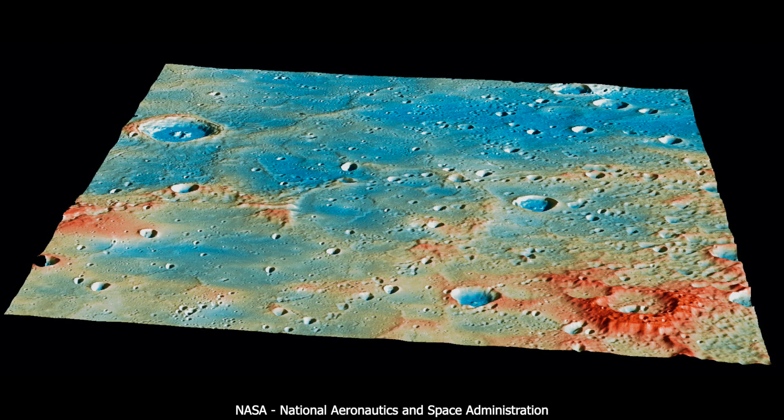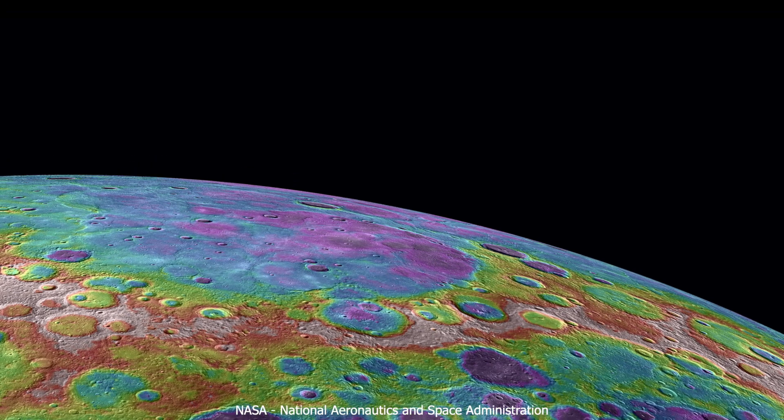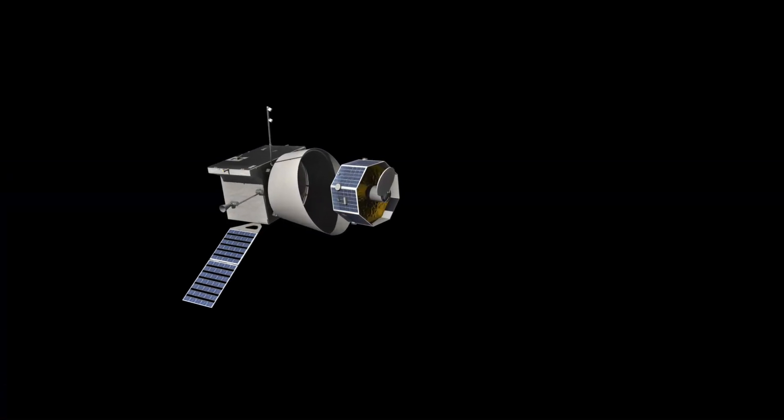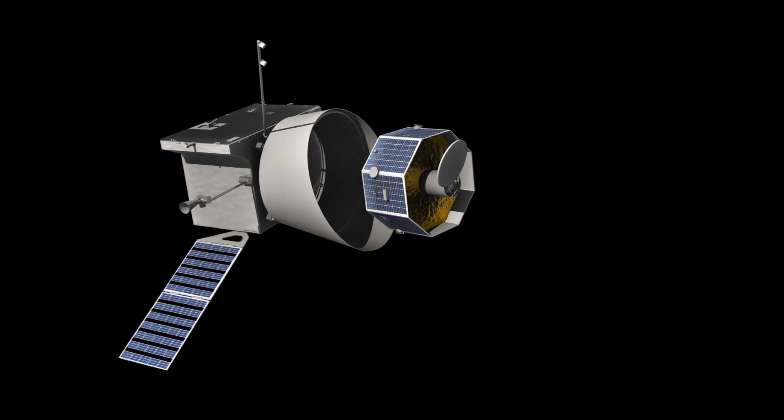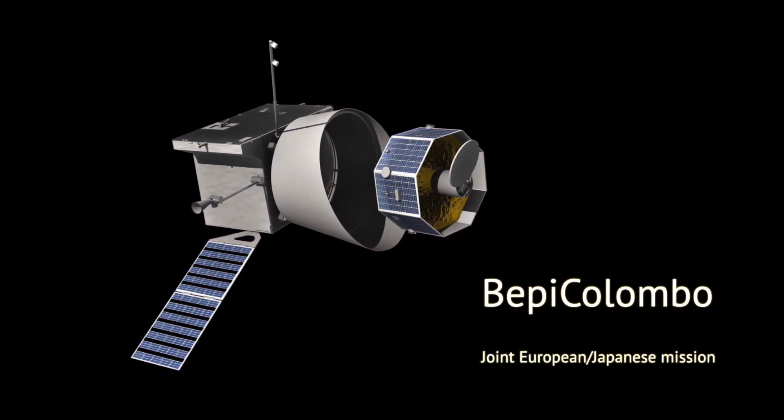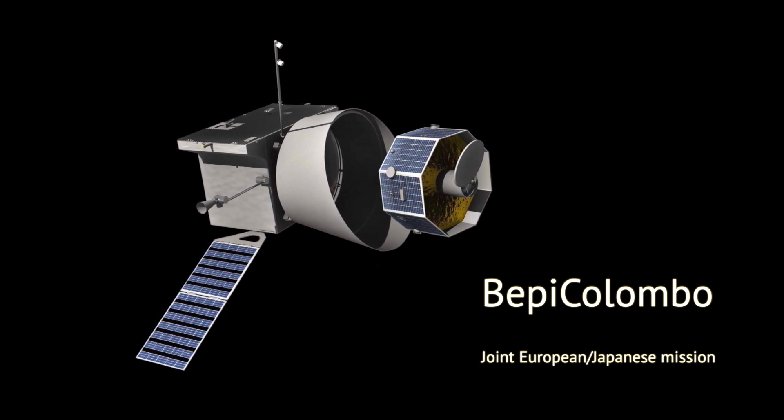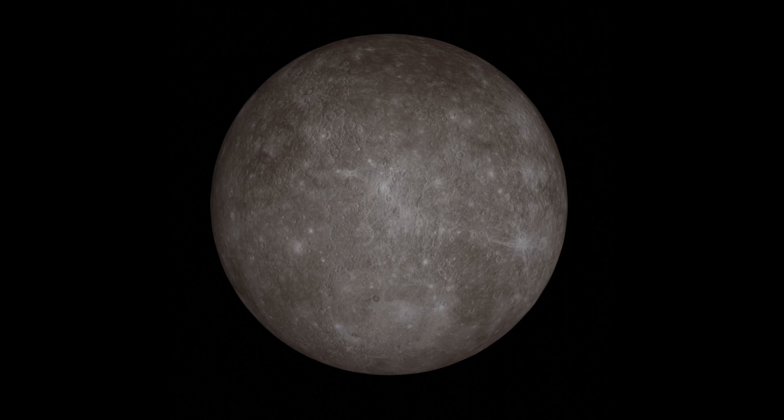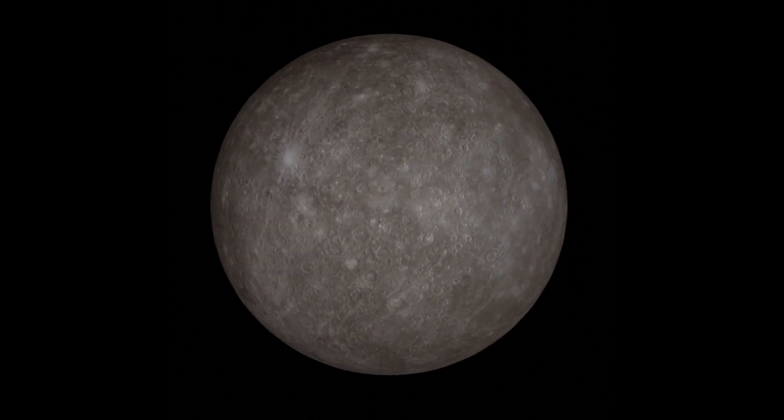Those are just the highlights. There is so much to explore on Mercury, and so much still to learn. Messenger's mission ended in 2015 when its fuel reserves ran out, but another probe is already on the way to pick up where it left off. This BepiColombo mission is expected to enter orbit around Mercury in 2025. It will investigate the surface conditions, interior, and the magnetic field in unprecedented detail, and even try to verify the theory of general relativity.